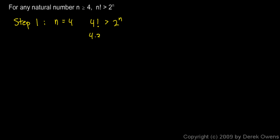4 factorial is 4 times 3 times 2 times 1. And 2 to the n — in this case n is 4 — so that should be 2 to the 4. Is 4 factorial greater than 2 to the 4? 2 to the 4 is just 16, so the right-hand side is 16. So is 4 times 3 times 2 times 1 greater than 16? Yes — 4 times 3 is 12, times 2 is 24. So 24 is greater than 16. It works for the number 4. We've shown it works in one case.